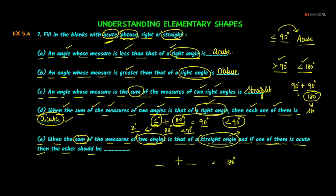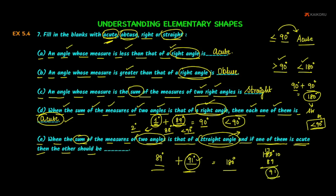A straight angle is 180 degrees. An acute angle is less than 90 degrees, for example 89 degrees. So if we add 89 degrees, then 180 minus 89 equals 91 degrees. Since 91 degrees is greater than 90 degrees, it is an obtuse angle. The answer is obtuse.